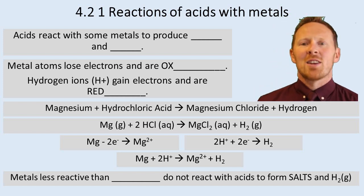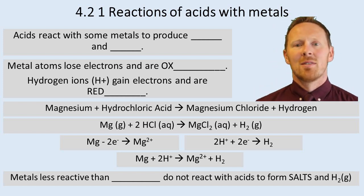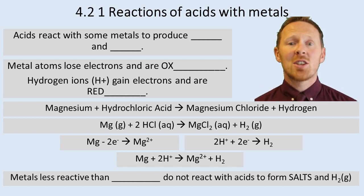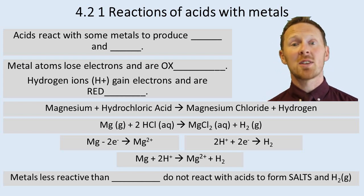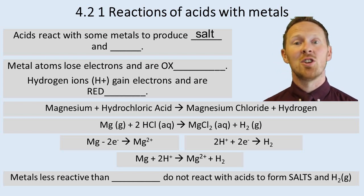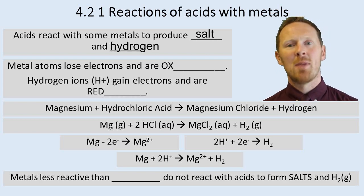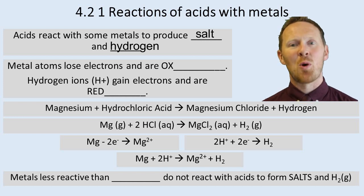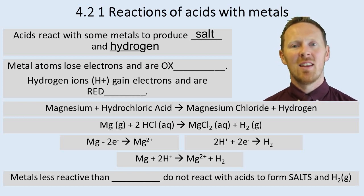4.2.1 reactions of acids and metals. Acids react with some metals to produce a salt and hydrogen. We'll come on to which metals do and don't react with acids later in this topic.